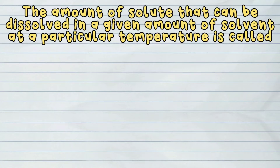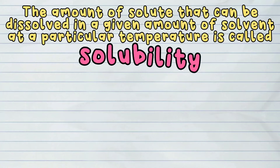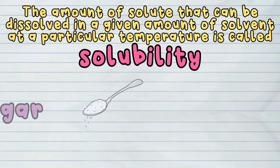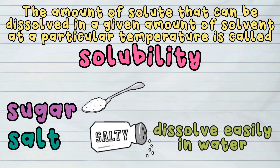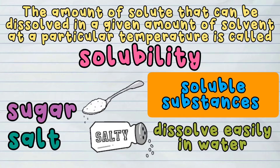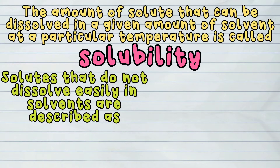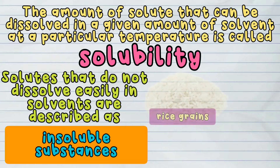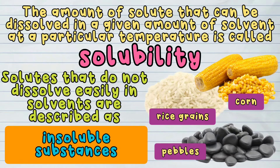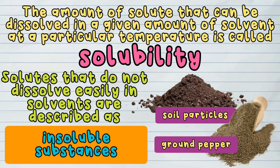The amount of solute that can be dissolved in a given amount of solvent at a particular temperature is called solubility. Substances such as sugar and salt dissolve easily in water — these substances are referred to as soluble substances. Solutes that do not dissolve easily in solvents are described as insoluble substances. Rice grains, corn, and pebbles are examples of insoluble substances. Soil particles and ground pepper also do not mix easily in water; thus, these are insoluble substances too.